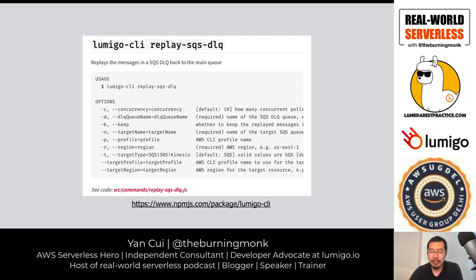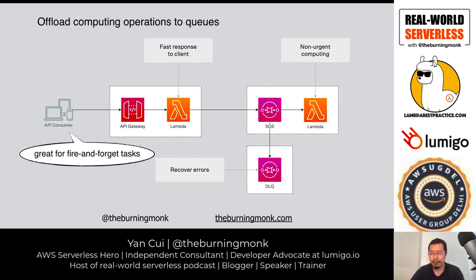You might want to try first in a dev account before replaying in production. There's a toggle to keep the messages after replay, so you can test in a dev environment and verify the problem is actually fixed before putting messages back into the production queue and risking further failures. This simple pattern is very effective, especially for fire-and-forget tasks received from POST commands.